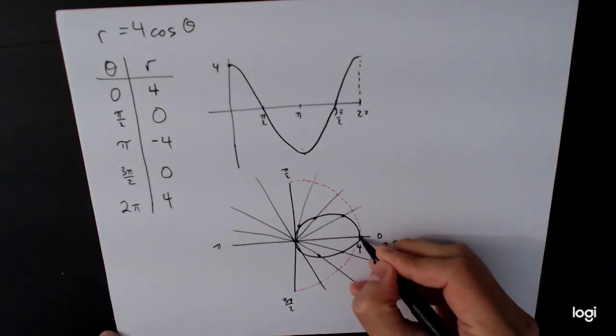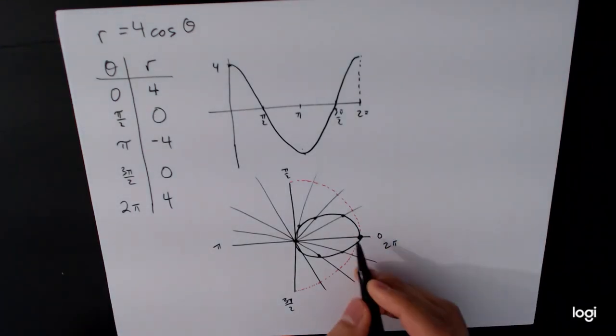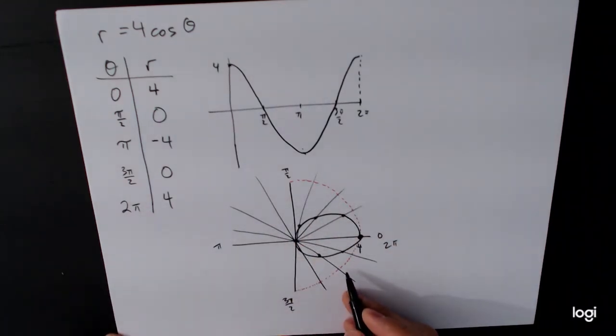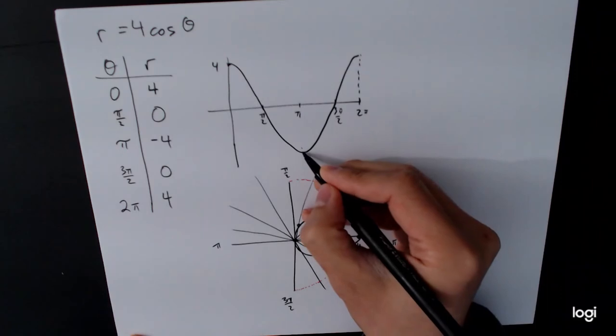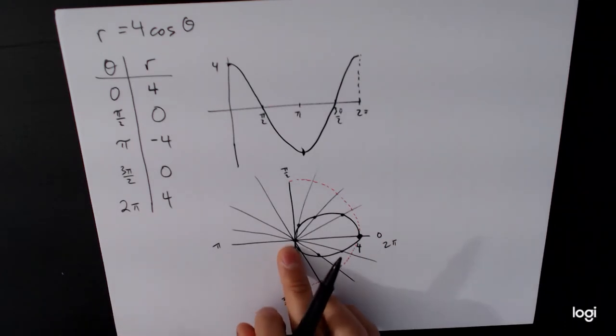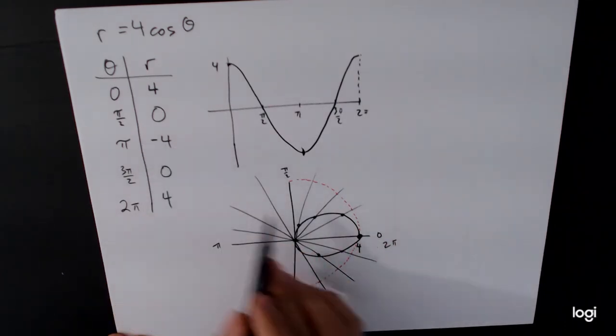The interesting thing here is that we ended up at the same point we started at. And that's what it means about completing one cycle. Now, I'm going to go ahead and finish the rest of the graph, starting from pi and going to 2 pi, just to show you what happens.